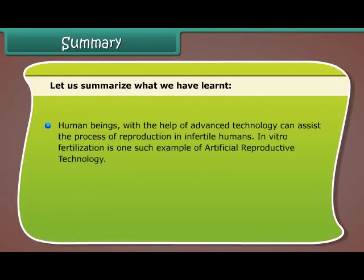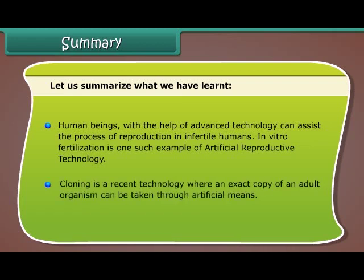Human beings, with the help of advanced technology, can assist the process of reproduction in infertile individuals. In vitro fertilization is one such example of artificial reproductive technology. Cloning is a recent technology where an exact copy of an adult organism can be created through artificial means.